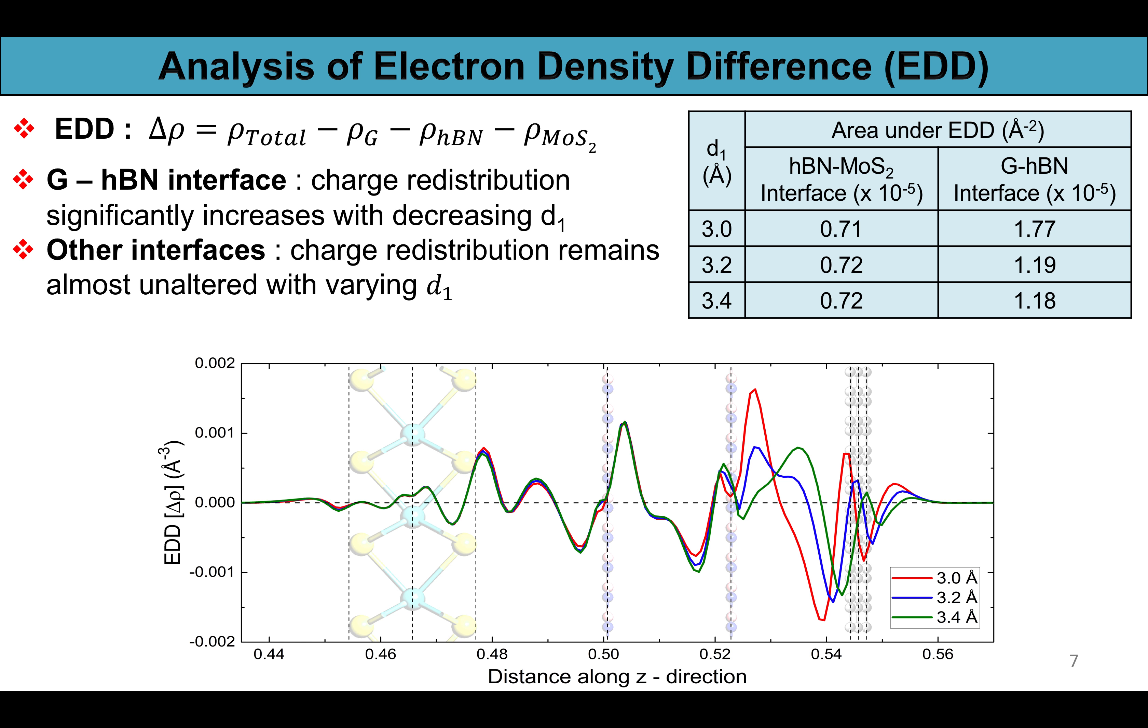But interestingly there is a dipole formation at the MoS2-hBN interface which in turn causes work function modification signifying band alignment of MoS2 and hBN. This effectuates a net charge transfer between MoS2 and hBN indicating p type character of MoS2.